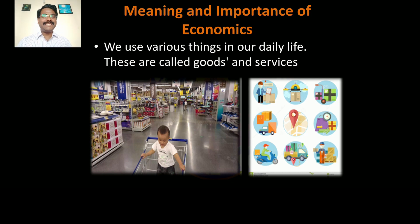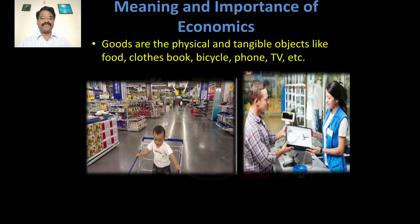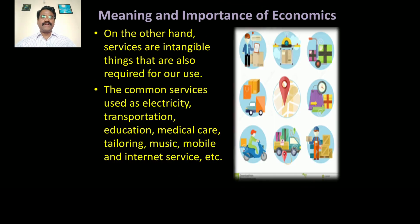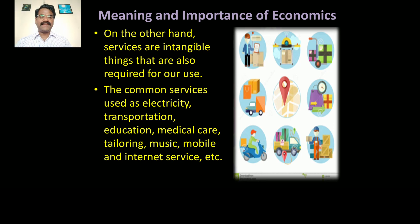We use various things in our daily life — these are called goods and services. Goods are the physical and tangible objects like food, clothes, books, bicycles, phones, televisions, etc. Services are intangible things that are also required for our life, such as electricity, transportation, education, medical care, tailoring, music, mobile and internet services. These intangible services are very essential to lead our life.